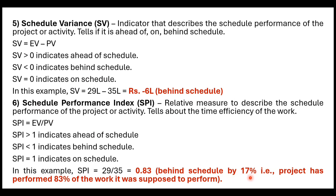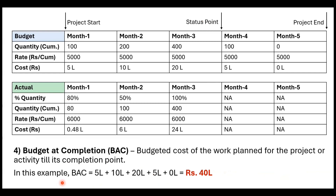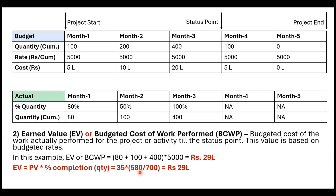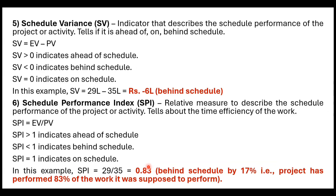SPI comes to 0.83, meaning you are lagging the schedule by 17%. You could only perform 83% of the work you were supposed to perform. This 0.83 can also be verified by dividing actual quantity (580) by planned quantity (700), giving the same 0.83. If you understand the logic there is no need to memorize the formulas.